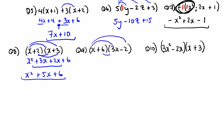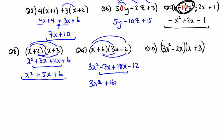Draw the lines if you want to see the direction you're going and the sums you're creating. X by 3x is 3x squared, x by minus 2 is minus 2x, 6 by 3x is plus 18x, and 6 by minus 2 is minus 12. We can see the two like terms in the middle: 3x squared — not cubed — plus 18 minus 2 is plus 16x, minus 12. Finished.